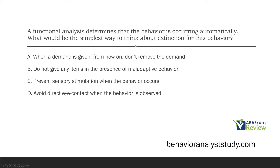Question six: a functional analysis determines that the behavior is occurring automatically. What would be the simplest way to think about extinction for this behavior? Why do we determine the function? Because the function tells us what type of reinforcer is likely to maintain the behavior. If the behavior is attention-based, attention as reinforcement will likely maintain it. So if our behavior is automatic, how are we going to think about extinction? A, when a demand is given, don't remove the demand — that sounds more like escape or avoidance, not automatic.